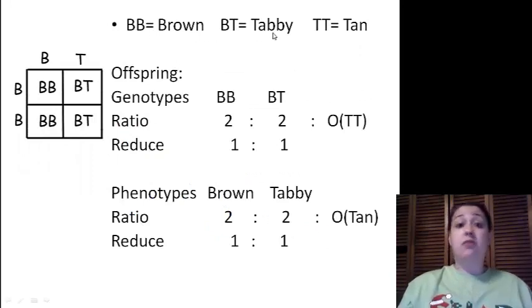When we look at BBs brown, BTs tabby, and TTs tan, if we cross a tabby with a black, we'll end up with genotypes being BB. We've got BBs here and BT, BT. Now we don't have any TT that's going to be a zero, which can be left off. When we talk about our ratio, we're going to count again. How many big B big Bs? Two. How many big T big Ts? Two. They can be reduced down to a one to one ratio.